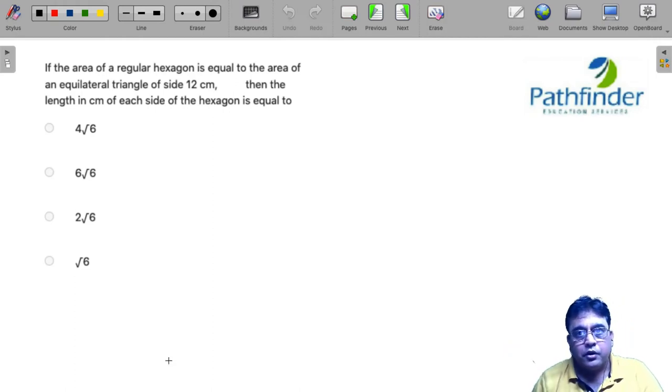This is CAT 2021 quantitative aptitude slot 1 question number 6.